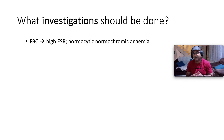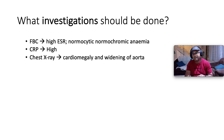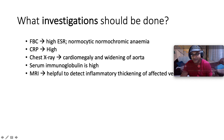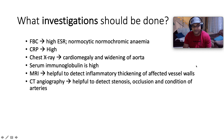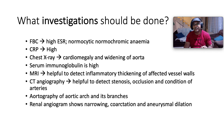For investigations: on full blood count you'll find a high erythrocyte sedimentation rate, as this is a granulomatous inflammatory condition, and you may have a normochromic normocytic anemia on the basis of anemia of chronic disease. CRP will be high. Chest X-ray may show cardiomegaly and aortic widening. Serum immunoglobulin is high. MRI is helpful to detect inflammatory thickening of the affected vessels. CT angiogram detects stenosis, occlusion, and condition of the arteries. Aortography of the aortic arch and renal angiogram demonstrate narrowing, coarctation, and aneurysmal dilation.